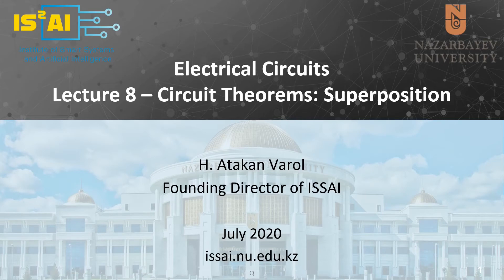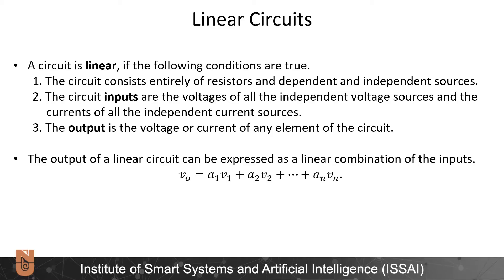In this lecture we will cover the superposition circuit theorem. A circuit is linear if the following conditions are true: the circuit should consist entirely of resistors and dependent and independent sources. The circuit inputs are the voltages of independent voltage sources and the currents of all independent current sources, and the output is the voltage or current of any element of the circuit. The output of a linear circuit can be expressed as a linear combination of the inputs.